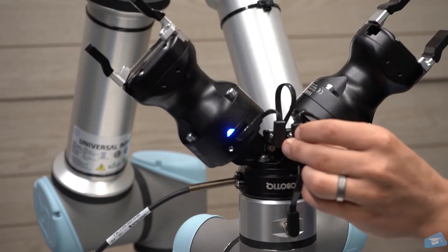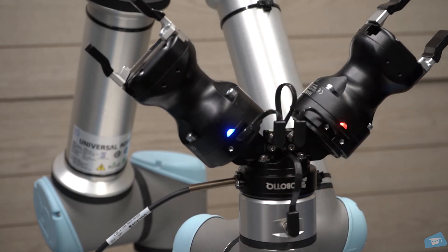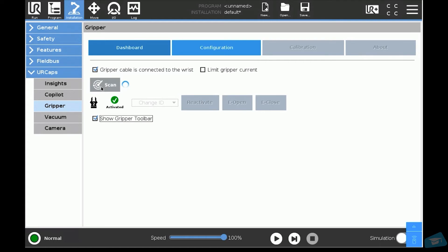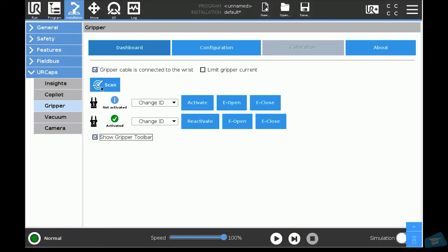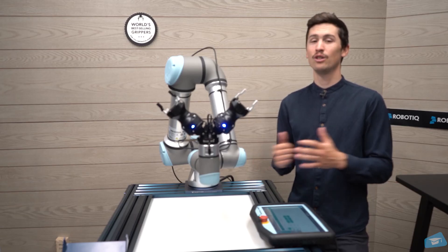Reconnect your first gripper and click on scan. Your two grippers should be shown. Click on the activate button of each gripper. They should now open and close. The grippers are now ready to operate.